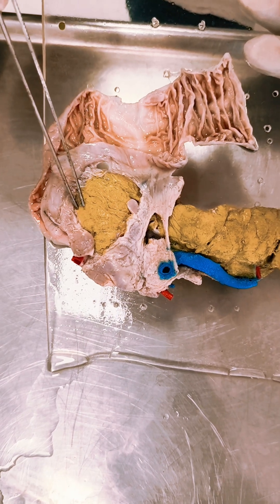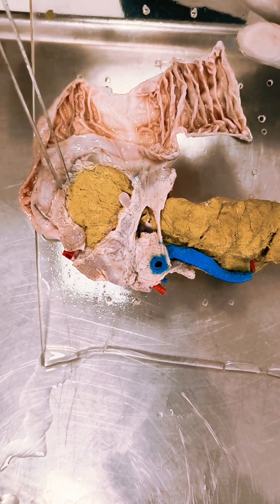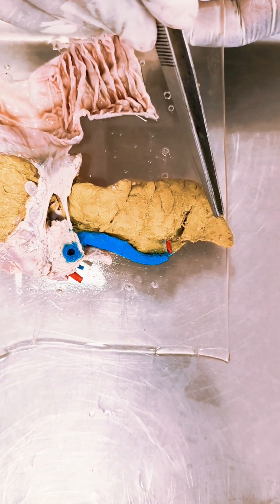This pancreas consists of four parts: the head of the pancreas, neck of the pancreas, body of the pancreas, and tail of the pancreas.